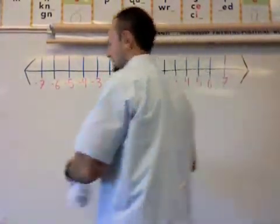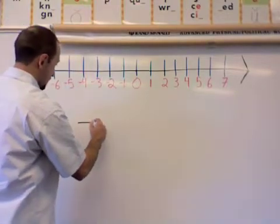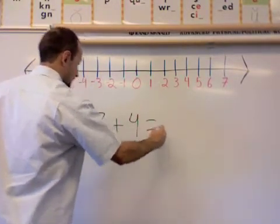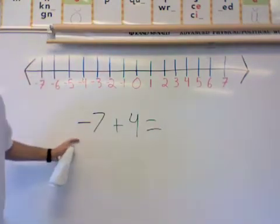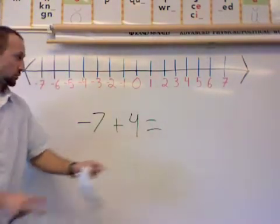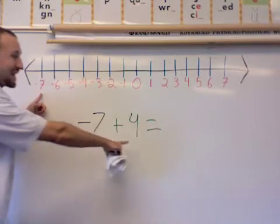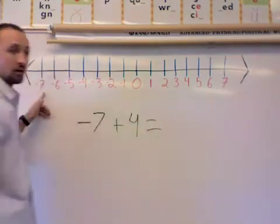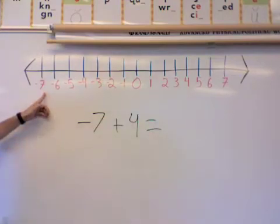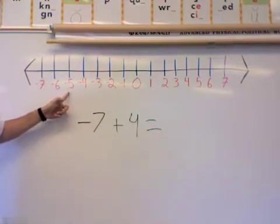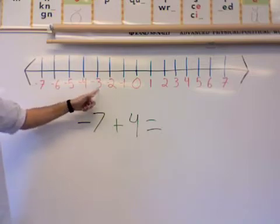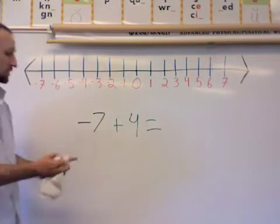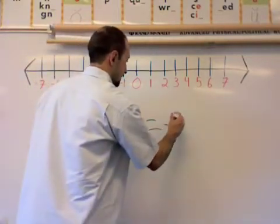Now let's look at something a little different. We are going to add a negative integer and a positive integer. So it's negative 7 plus 4. So I'm going to start at negative 7 and since I'm adding a positive integer, I'm going to move down the positive side of the number line. I'm going to move 4 places: 1, 2, 3, and 4. This is where I landed 4 places away. So I know my answer has to be negative 3.